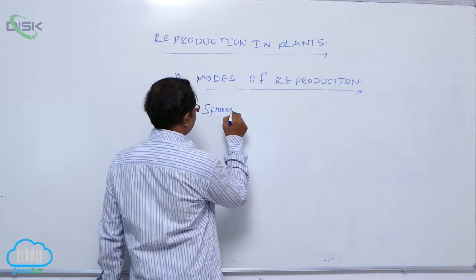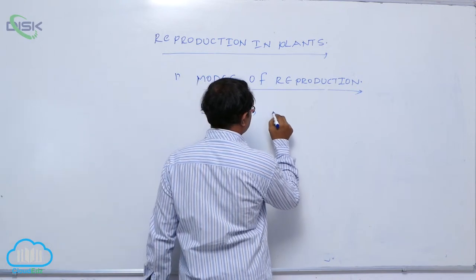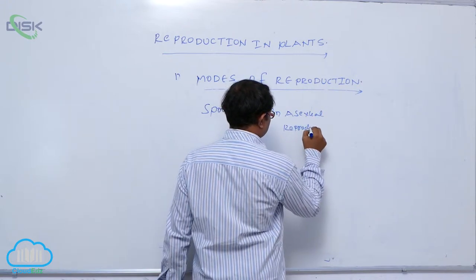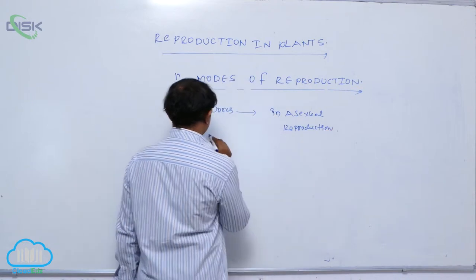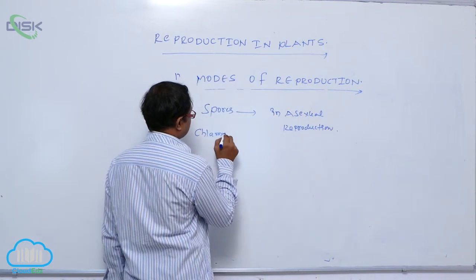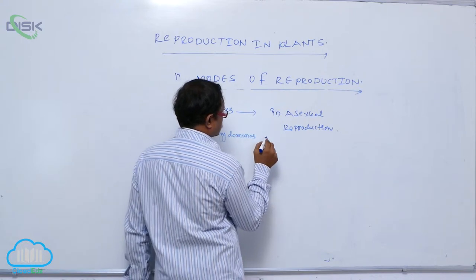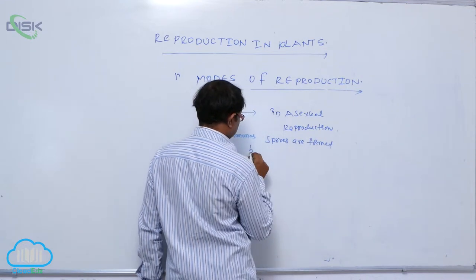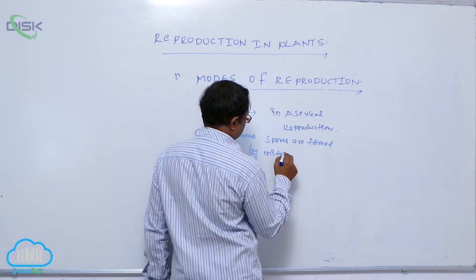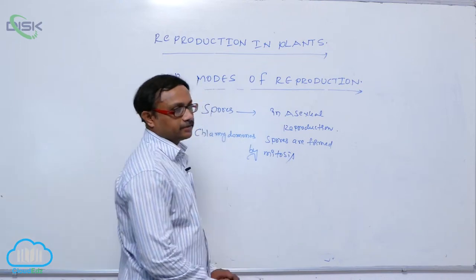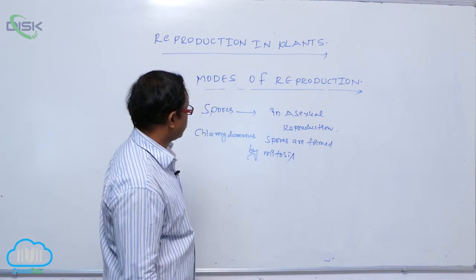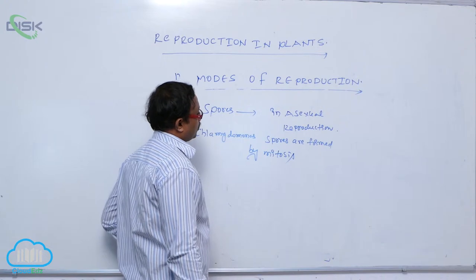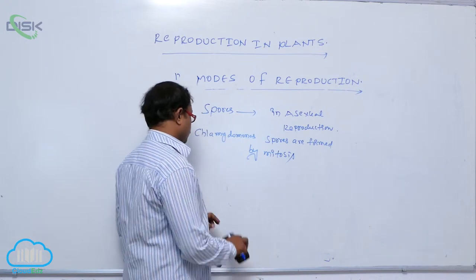Spores are involved in asexual reproduction. In Chlamydomonas, spores are formed by mitosis process. If it is a plant body, then spore formation is also by mitosis. For remaining organisms, generally spores are formed by meiosis process.